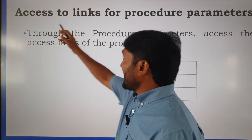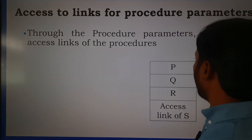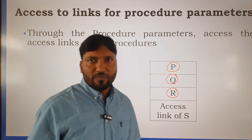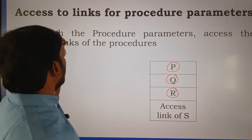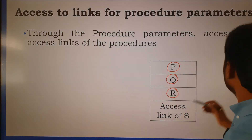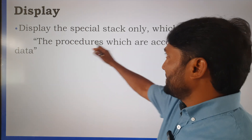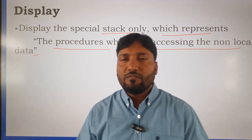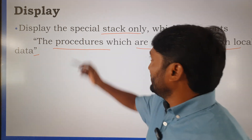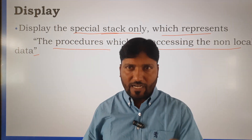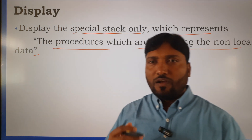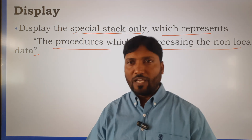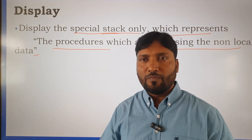The sixth option is access links for procedure parameters. With procedures P, Q, and R, using S we provide the access link — that is called access links for procedure parameters. The last option is display: a special stack which represents the procedures that are accessing the non-local data. In the given program, we maintain a special stack, and with the help of that stack you can access the non-local data. This is what display means. I hope you understand how to access the non-local data on the stack by modifying the activation record. Thank you very much. If you have any doubts, please comment in the comment box.